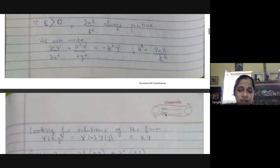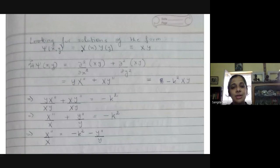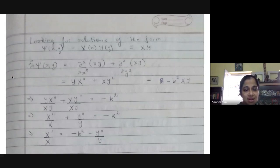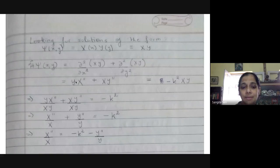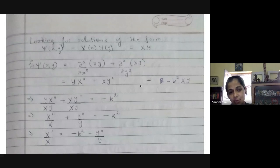We look for solutions of the form X(x) times Y(y), adopting the separation of variables technique — we're only looking for solutions which are separable into a product of functions, one with variable x and one with variable y. Using shorthand notation X·Y, the action of the second derivatives on X·Y gives: ∂²/∂x² of X·Y yields Y times X double derivative, and from the second term I can take out X and get the second derivative of Y.